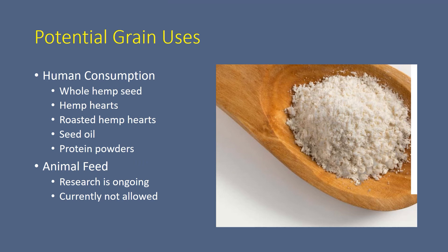Grain production offers many opportunities. You can see some of the utilizations that we're having right now: hemp hearts, roasted hemp hearts, seed oil, protein powders, and those types of things — they're commercially available right now. As we look to the future we'd like to see that list expand greatly, so our hope is there.